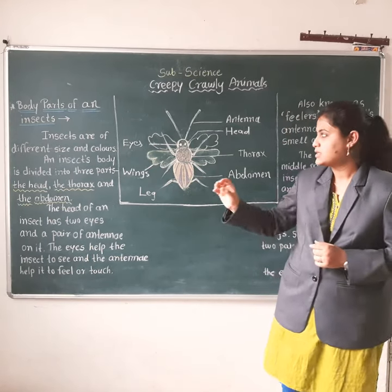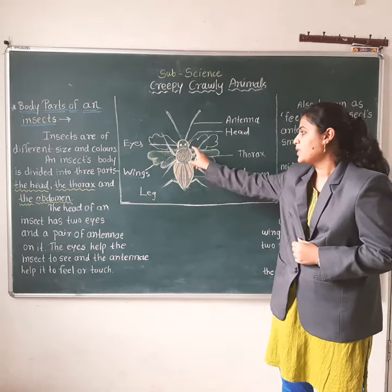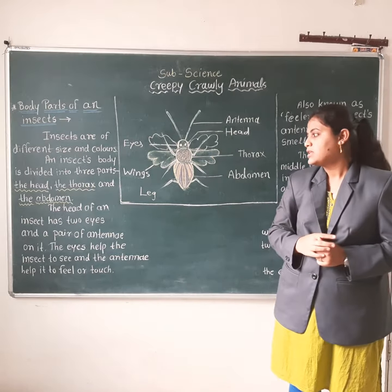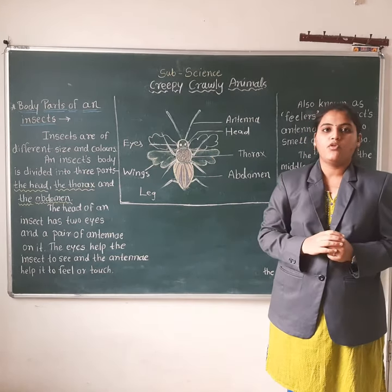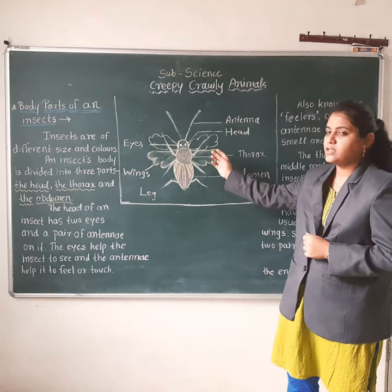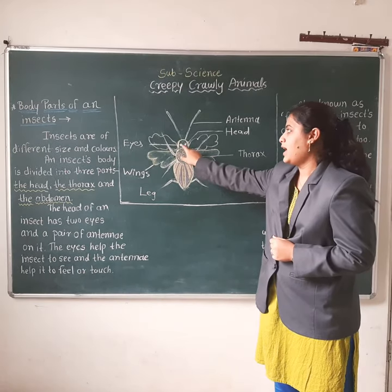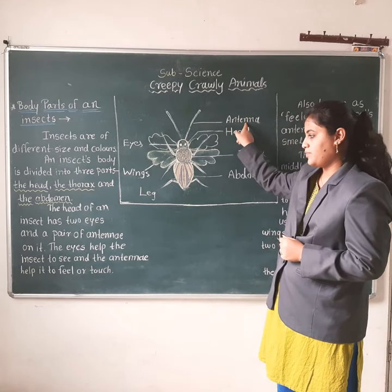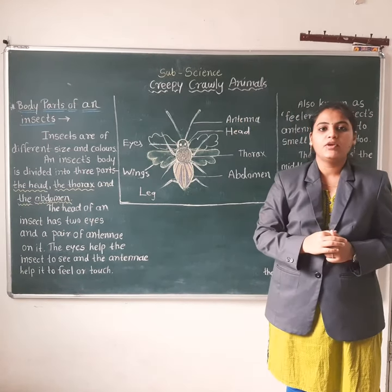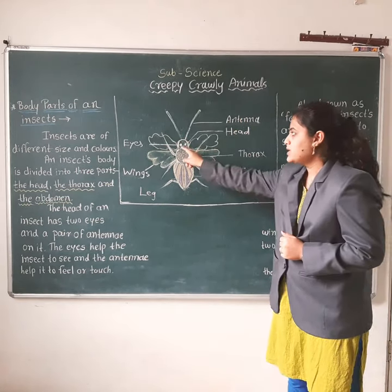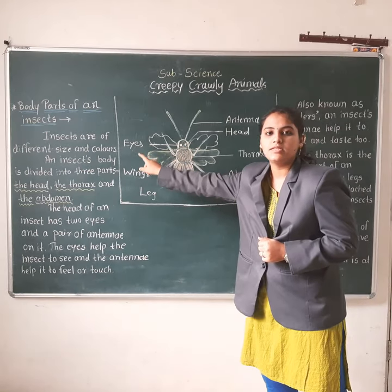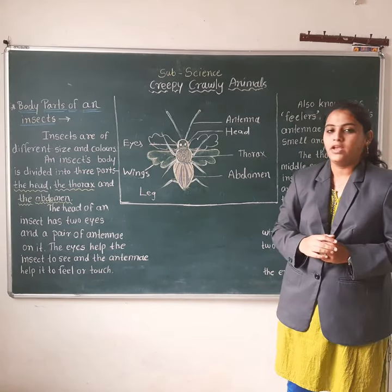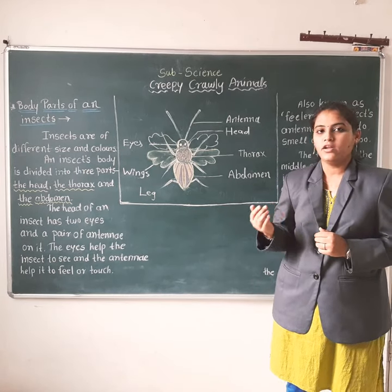Now we will see the first body part — the head. The head of an insect has two eyes and a pair of antennae. The eyes help the insect to see, and the pair of antennae helps it to feel or touch.